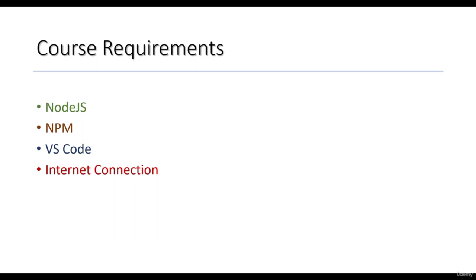So what do we need before we start the course? First of all, you will need a working machine. You will need Node.js installed because for one of the demo projects, we are going to have a small server.js file which contains a back-end API written in Node.js and Express. Don't panic — you're not supposed to know anything about the Node.js stuff. It's just having Node installed so you can run that server.js file.